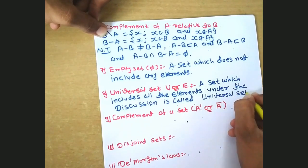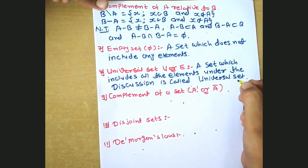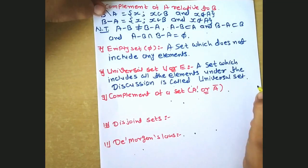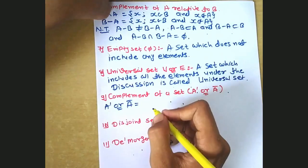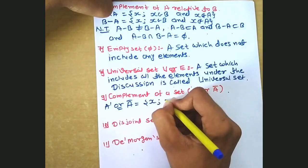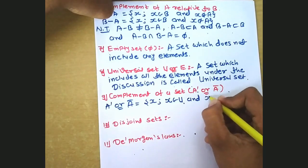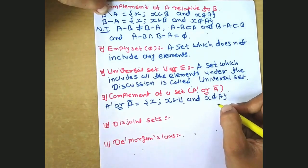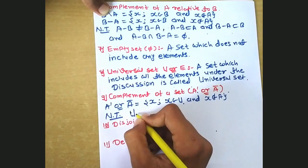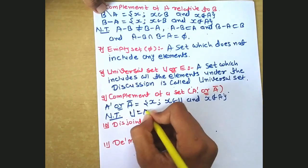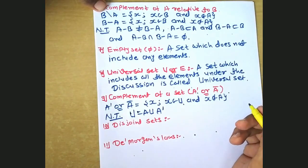This is called the universal set. Next, the complement of a set — denoted as A' or A-bar — is defined as the set of all x where x belongs to U and x does not belong to A. Also note that A union A' becomes the universal set U.